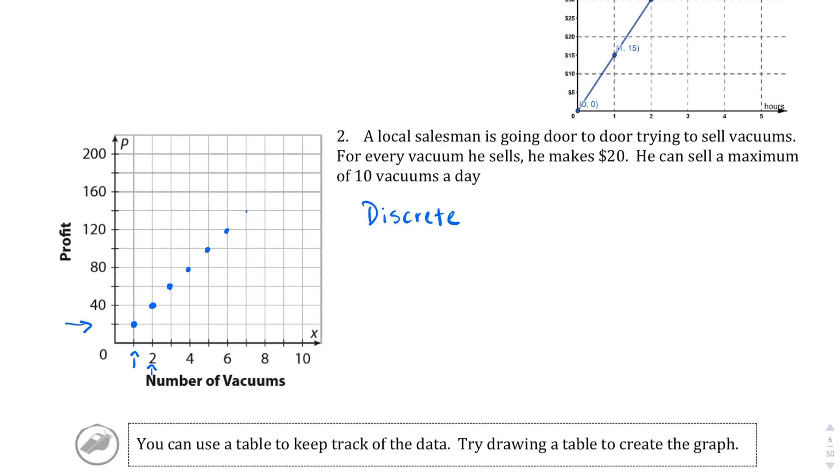So if he can sell a maximum of 10 vacuums a day, the maximum amount of money he can make a day is $200. And we're not going to actually connect these dots because this is a discrete graph. So we're going to end it there. So we're going to have to connect the lines for that.